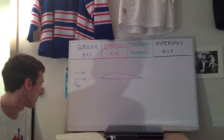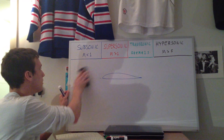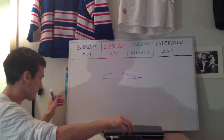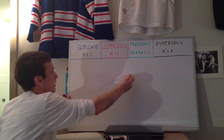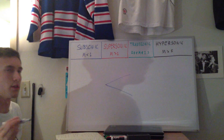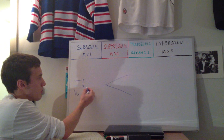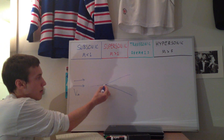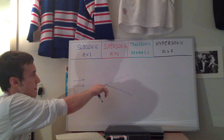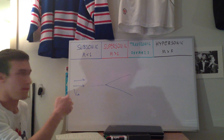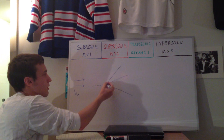Now with supersonic flow — and I'll skip over transonic briefly to go to supersonic and then come back — I'll use a wedge. So this is just some wedge in a flow with V-infinity coming at it. The particles are moving towards the body, and since properties normally propagate upstream at the speed of sound but the body is moving faster than the speed of sound, they're not able to propagate back upstream. So what happens is a shockwave forms.